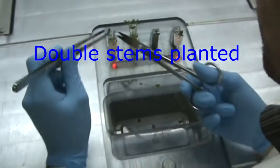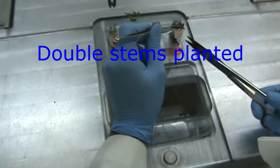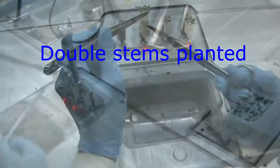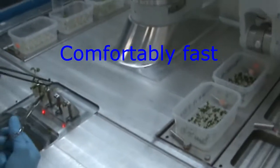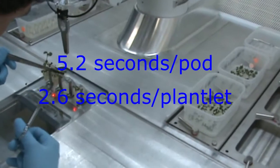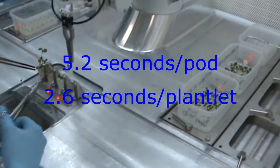Here we see potato plantlets being cloned, but with two explants put into each pod, which can be beneficial. The speed is good at an average 5.2 seconds per pod, only 2.6 seconds per plantlet.